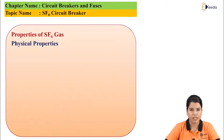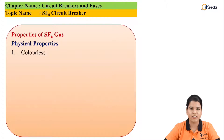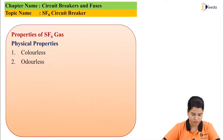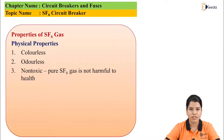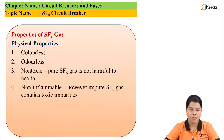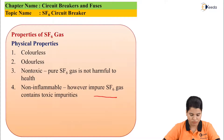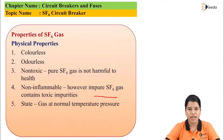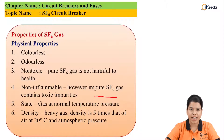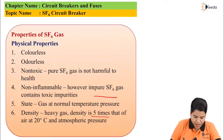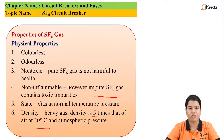Now let us see the physical properties of SF6 gas. First, it is colorless. It is odorless. It is non-toxic — meaning pure SF6 gas is not harmful to health. SF6 gas is non-inflammable, though impure SF6 gas may contain certain toxic elements. The state of SF6 gas is that it is a gas at normal temperature and pressure. Its density is 5 times that of air at 20 degrees centigrade atmospheric temperature.